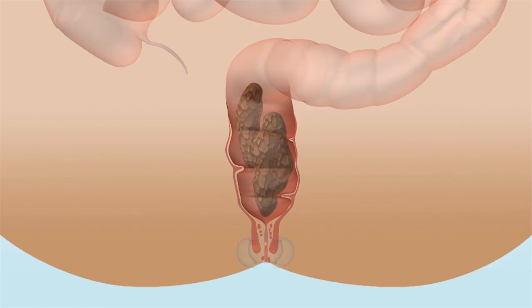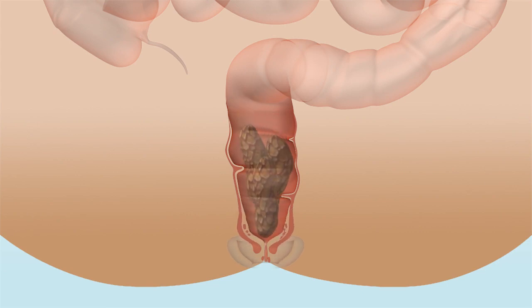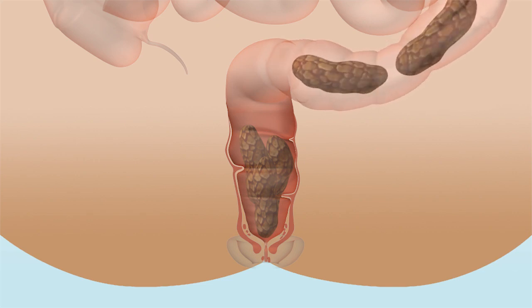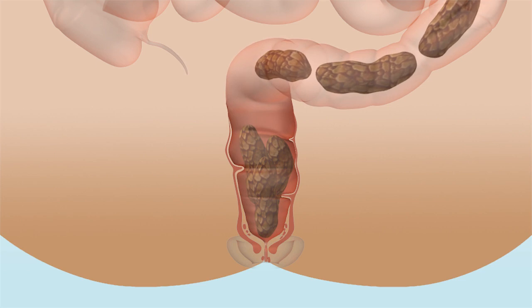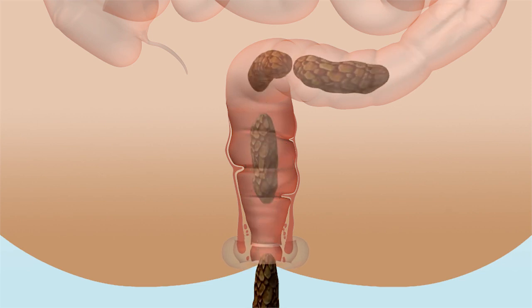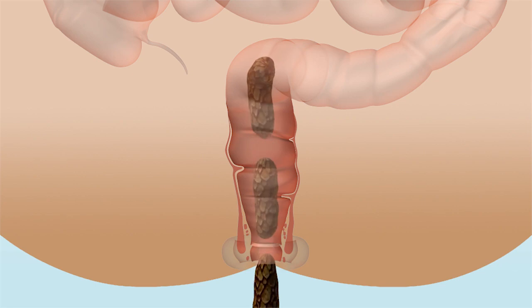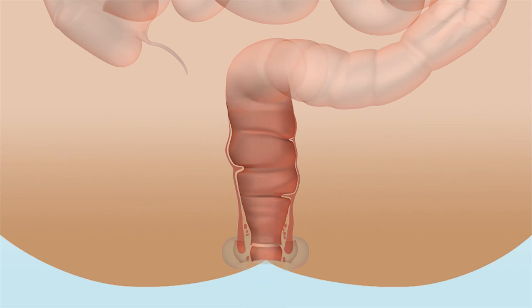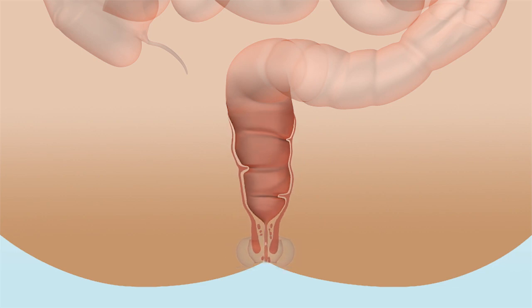At the same time, your internal sphincter relaxes by reflex and stool moves down towards the anus. When you are ready, you consciously allow the external sphincter to relax and stool is expelled. In between going to the toilet, both the internal and the external anal sphincter are contracted to keep you continent and to prevent leakage.